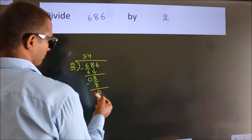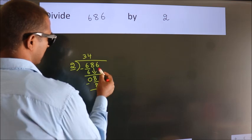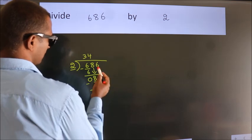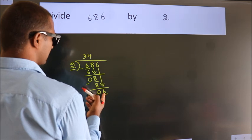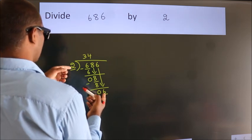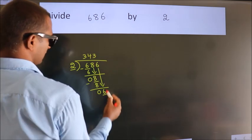After this, bring down the beside number. So 6 down. So 6. When do we get 6? In 2 table, 2 threes, 6.